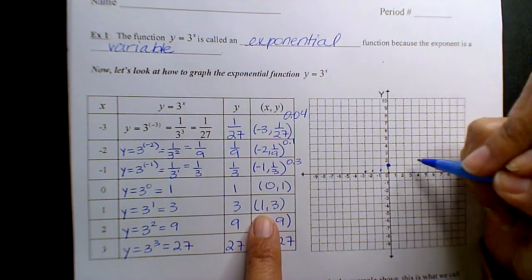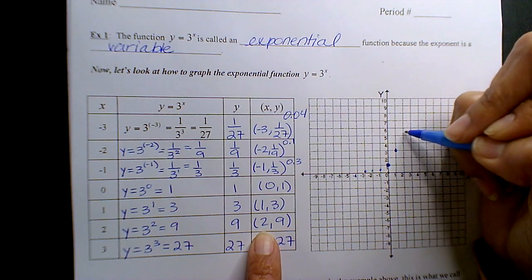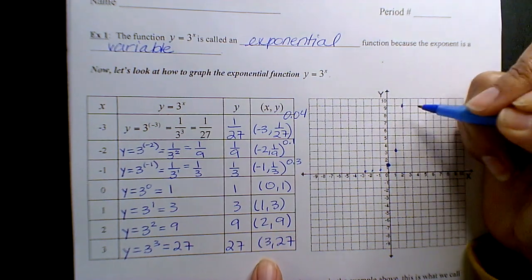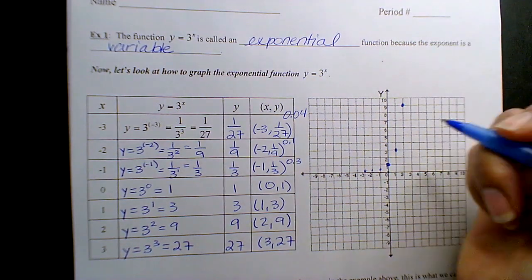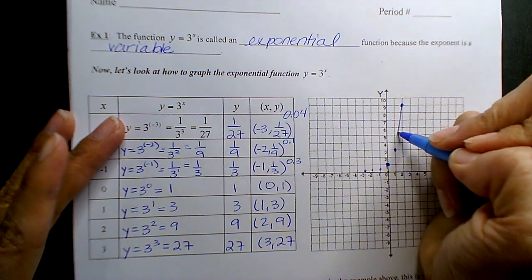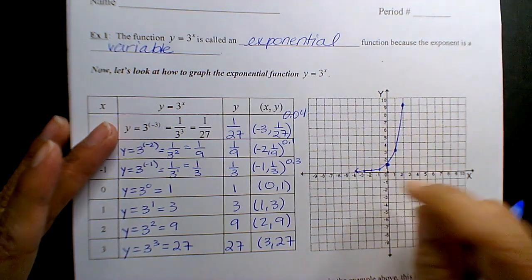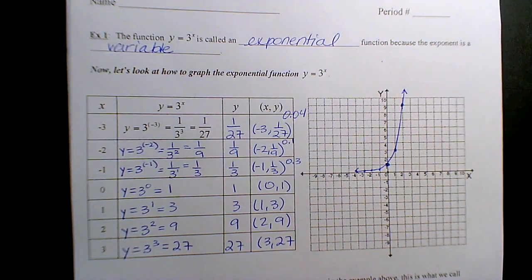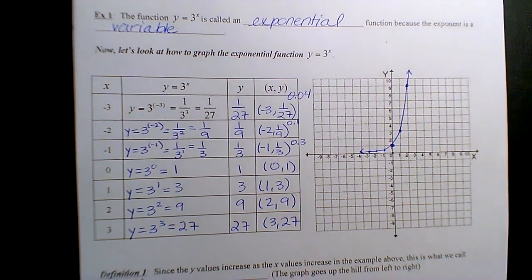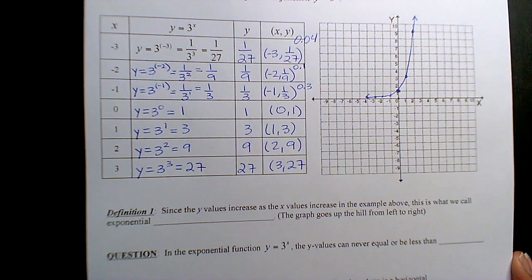So now you'll plot 1, 3. Then 2, 9. And 27 isn't going to fit, so you can just leave that one out. Don't even bother going way up high. But your exponential function, you can put an arrow. Don't cross the line. It's going to keep going up. That's an exponential growth function.